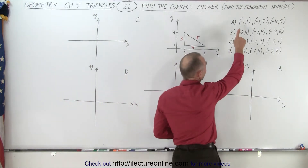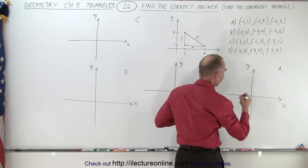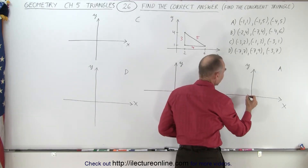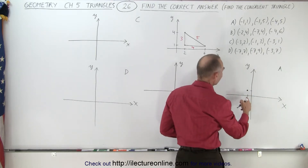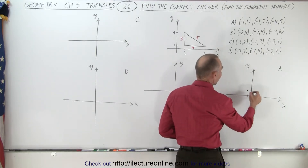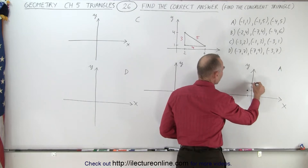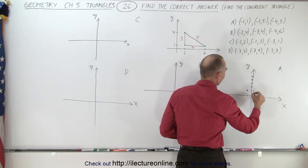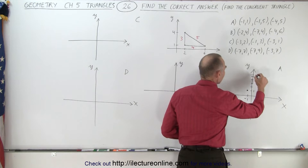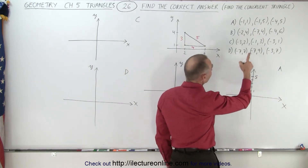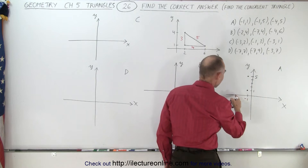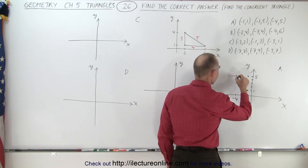Starting with Triangle A, the first point is at (-1, 1), so negative one in the x direction and positive one in the y direction. The next point is (-1, 5) — negative one, five. And then we have (-4, 5), which is negative four in x and five in y.